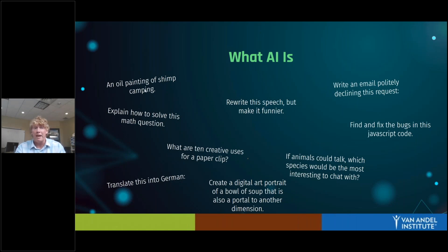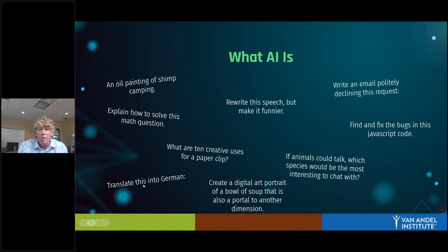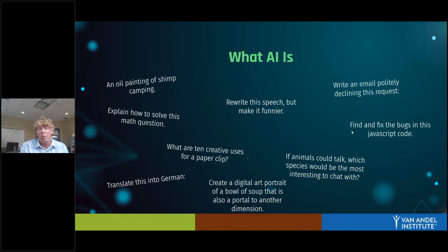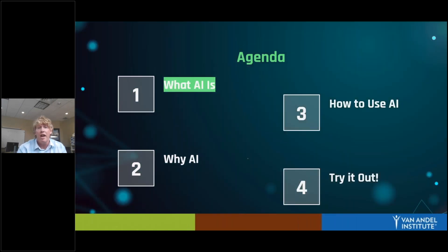When you see what they create, you can't tell that it came from a machine or from an expert human — it really is incredibly smart and incredibly powerful. People are using it for all sorts of things: whether they want to create an oil painting of shrimp camping, add humor to a speech, do translation, or fix bugs in code. AI is this incredibly versatile, powerful tool that mimics human intelligence, quickly and easily and well.